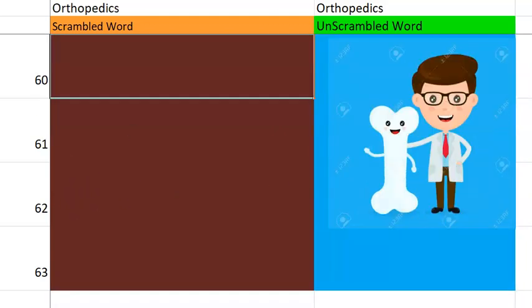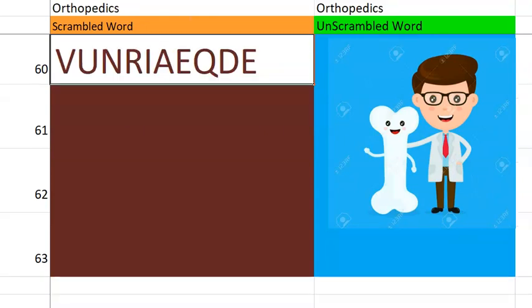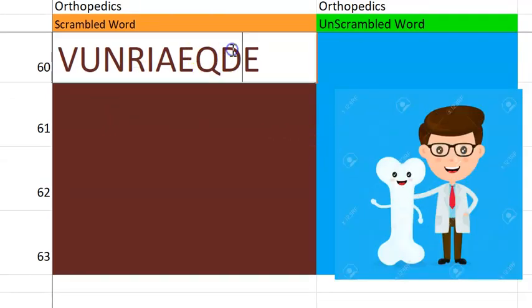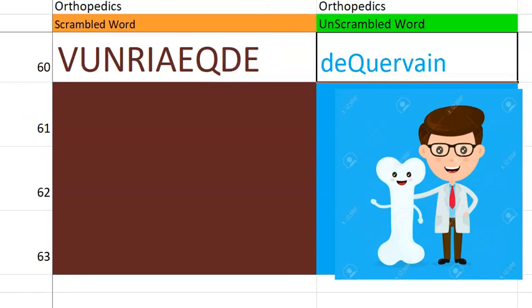Let's go to the 60th one. Starts with D — D, some tenosynovitis. De Quervain tenosynovitis. It is a painful condition that affects the thumb — tendons on the thumb side of your hand.